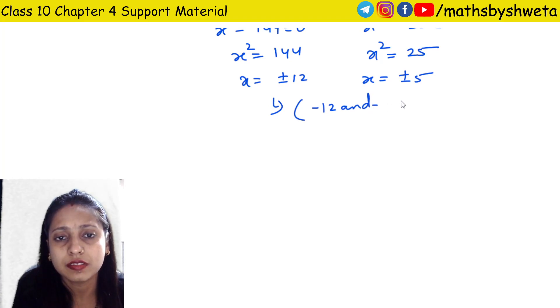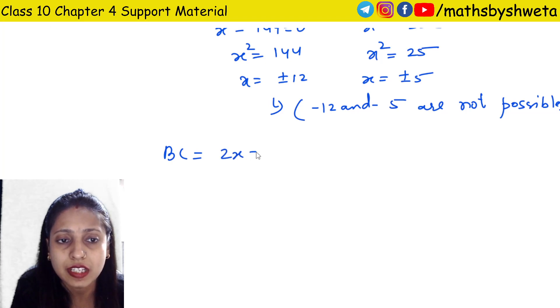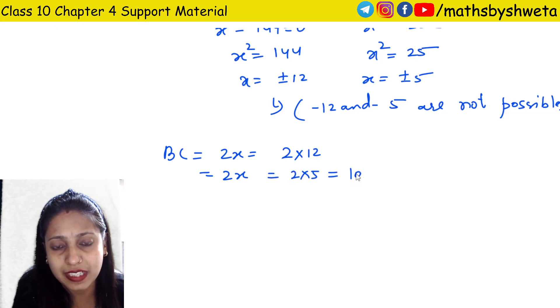Negative values are not possible, so x equals 12 or x equals 5. BC's value is 2x, so it's 2 into 12 or 2 into 5. There are two values: 24 cm and 10 cm.